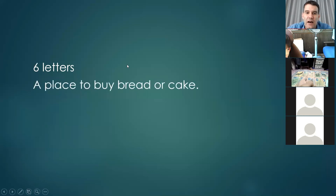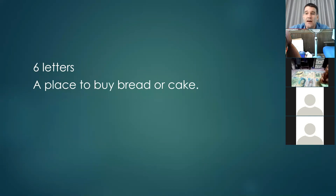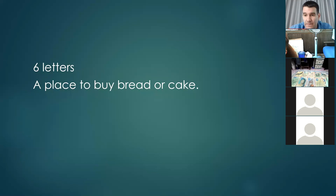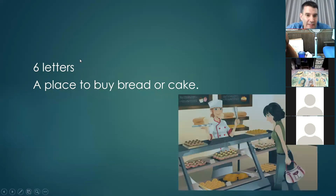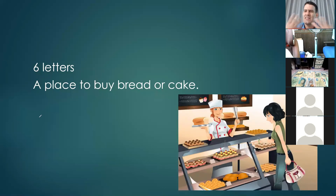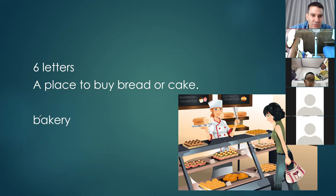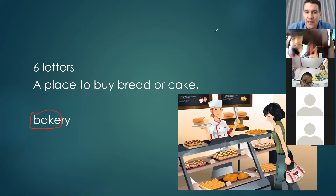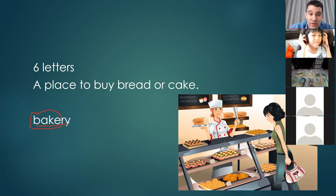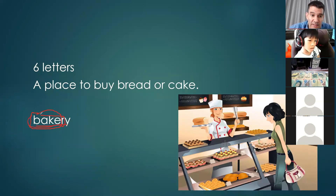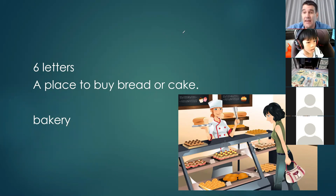The next one is six letters — it is a place where you buy bread, cake, desserts, and pastries, things made in an oven. It always smells very nice inside. The word 'bake,' B-A-K-E, means to cook in an oven. A 'baker' is the person who bakes, and they work in a bakery. So a bakery is the place where bakers bake things for you to buy.